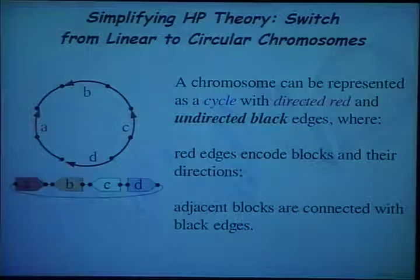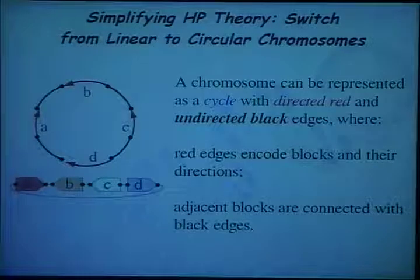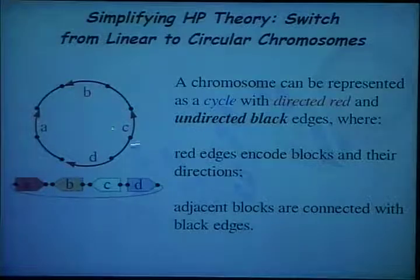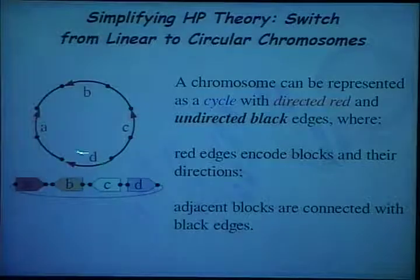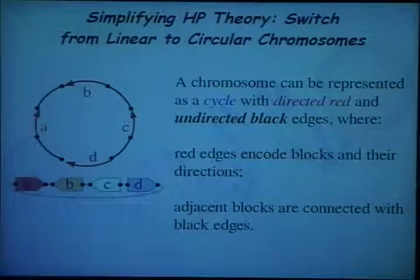For simplicity, assume that our genomes contain circular chromosomes, and I represent each chromosome as a cycle. For example, if you have a chromosome on four genes A, B, C, and D, then we can represent it as a cycle which contains four directed edges encoding the genes and their direction, as well as four undirected edges that encode the adjacencies between the genes.